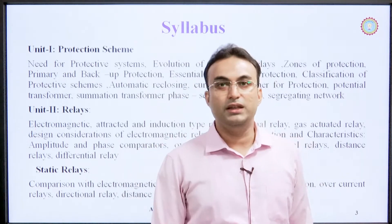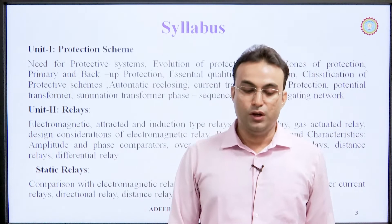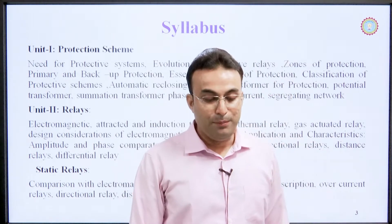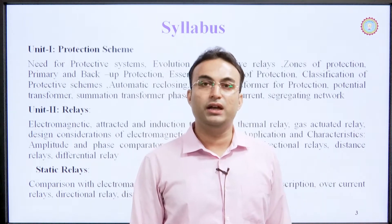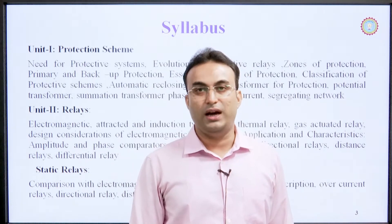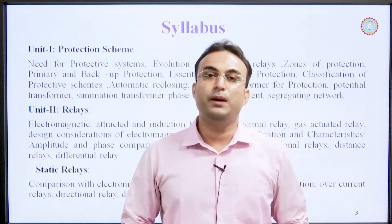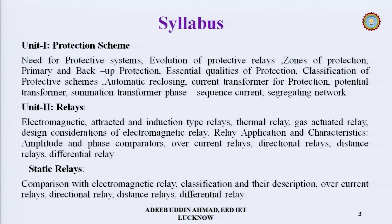There are five units in this syllabus. Unit 1 covers protection schemes: the need for protection, evolution of protective relays, zones of protection, primary and backup protection, essential qualities and classification of protection schemes, and instrument transformers including potential transformers and current transformers. Unit 2 is dedicated to relays, covering electromagnetic attracted and induction type relays, thermal relays, gas-actuated relays, design considerations, relay applications, and amplitude and phase comparison.